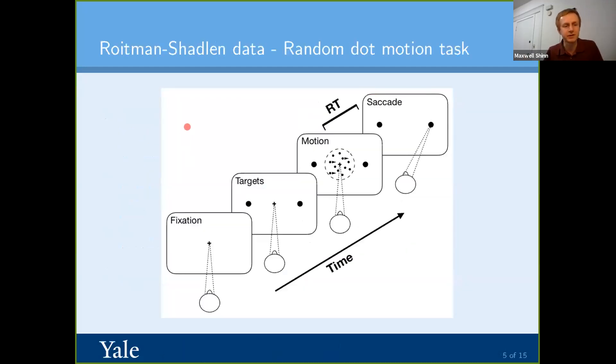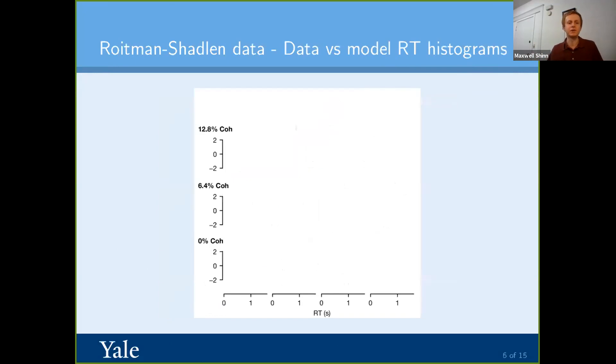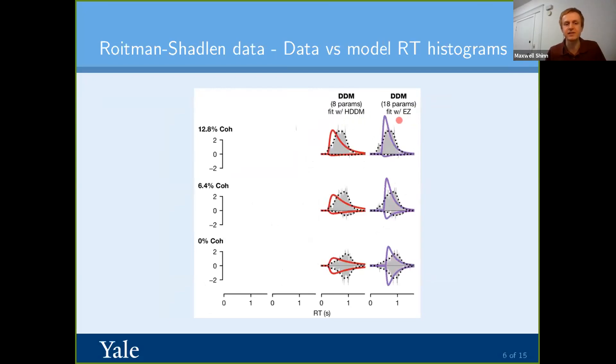So to first validate our model, we wanted to look at this Roitman and Shadlen data set from their 2002 paper. The basis of this is the random dot motion task that they gave to monkeys. And what you do is you look at this field that has dots moving to the left and to the right, but there's a higher percentage of dots moving in one direction versus the other. And so your job is to distinguish whether it's to the left or to the right. And once the monkey makes a choice, it saccades either to the right or to the left to indicate its choice. And so this, sort of like drift diffusion model, we have a reaction time from this. And so we can fit the reaction time distribution. So first, we tried fitting it with just a normal drift diffusion model. And this is using two popular software packages, one HDDM and the other is EZDDM at three different coherence levels. And this is the correct responses on the top and error responses on the bottom. And you can see that, I mean, it kind of fits the distribution. It kind of doesn't. It's OK.